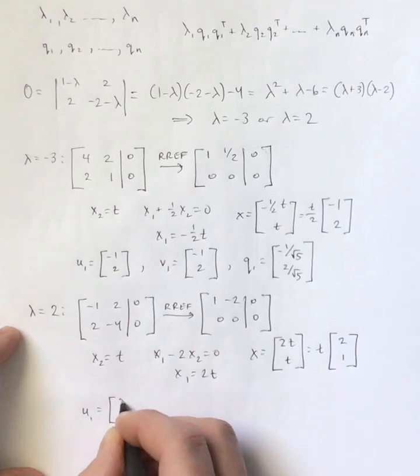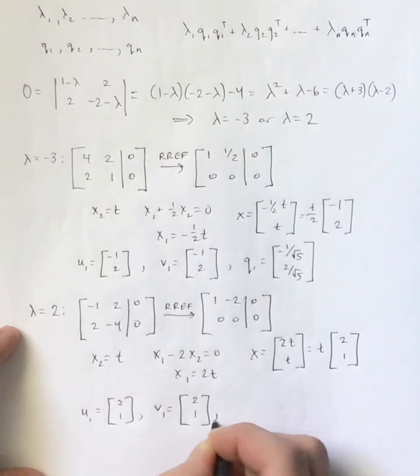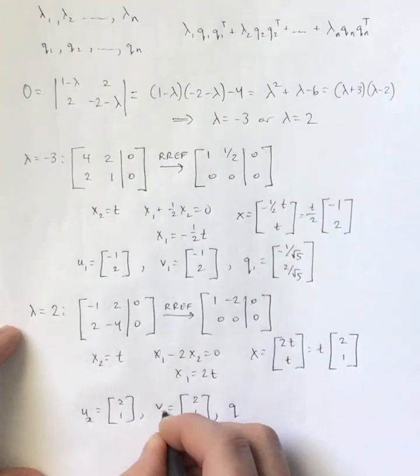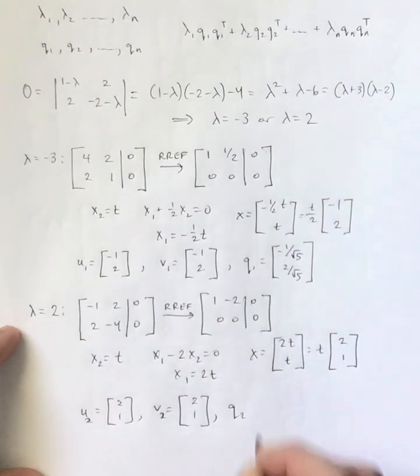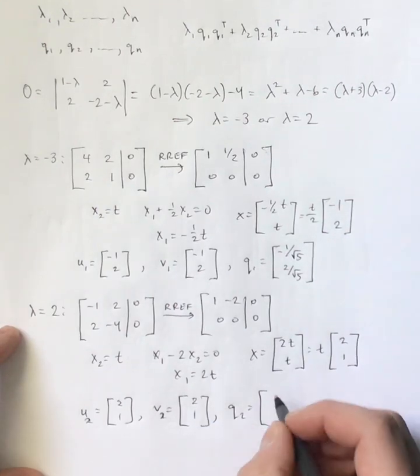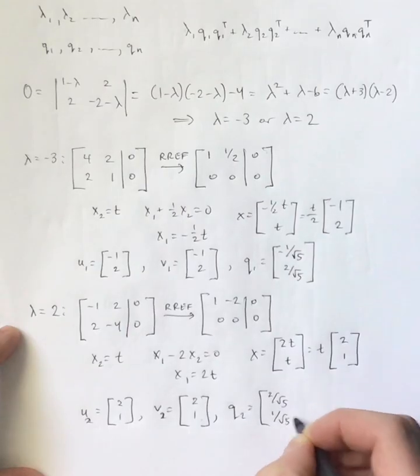And so therefore, U1 is that vector. V1 is that vector. And then Q, actually, I guess I should say 2. Q2, this again has a magnitude of root 5. So we'll say 2 over root 5, 1 over root 5.